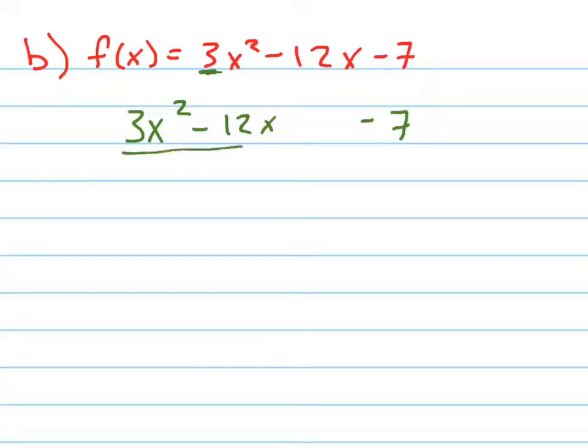But now I have to also factor out of here that 3. So this is 3 times x squared minus what's 12 divided by 3? 4x. And now when I'm adding something here, whatever I'm adding here, I really have to do what? When I'm adding that.